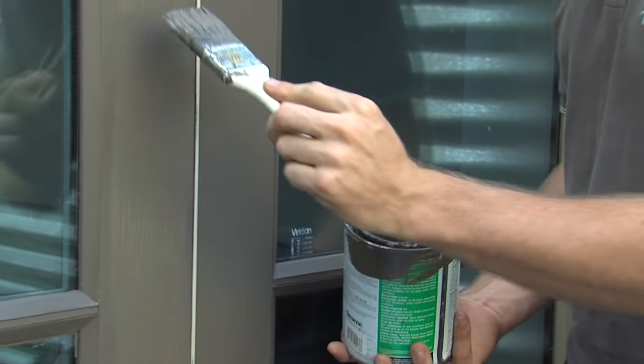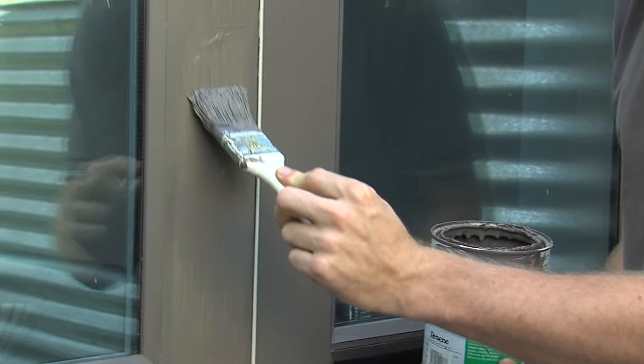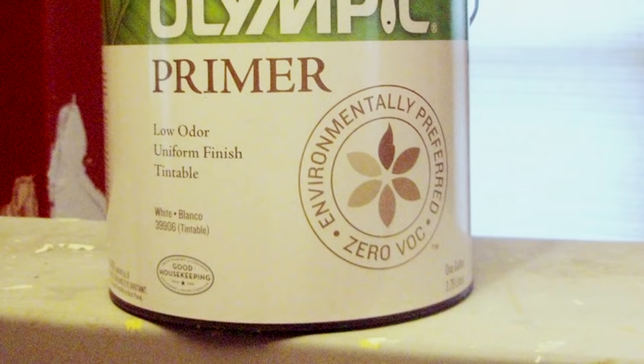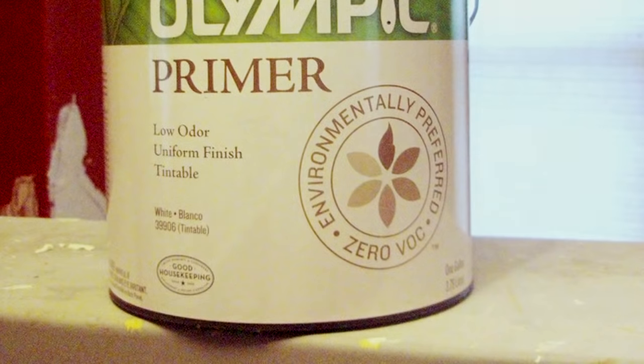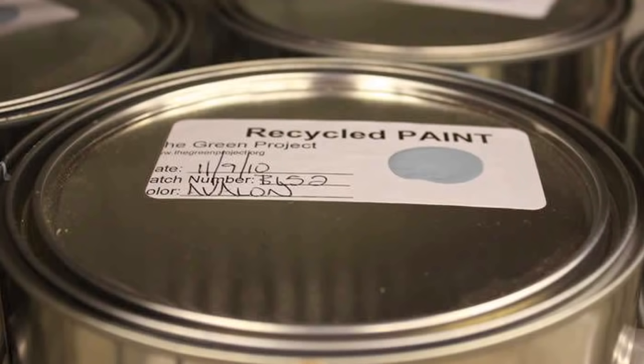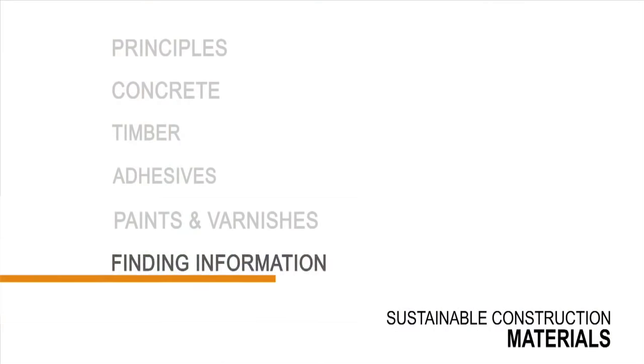Paints and varnishes generally contain VOCs. Choose low VOC paints, stains and varnishes — these are all readily available. Some paints have additional green credentials; for example, they might contain recycled content. Check the options with your supplier.